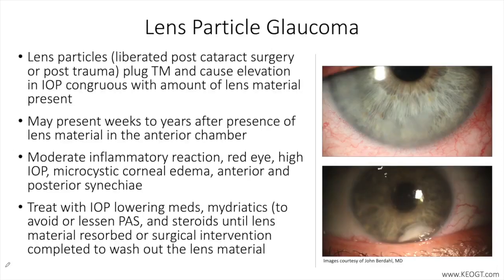Lens particle glaucoma results from liberated cataract material after the lens capsule is compromised post-cataract surgery or trauma. This is in distinction to phacolytic glaucoma, which occurs in the absence of visible openings in the lens capsule. The liberated lens material subsequently acts as a physical barrier to aqueous humor egress from the anterior chamber across the trabecular meshwork and into the distal outflow system.